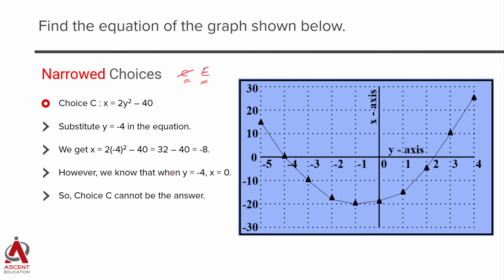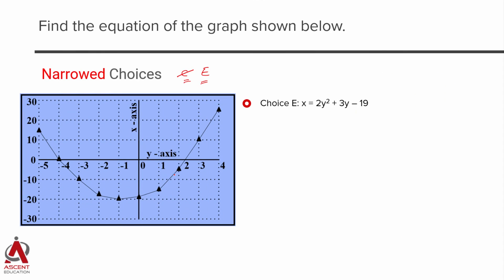Now what we are left with is choice E, but we will check out whether it satisfies before we zero in on choice E. So choice E is x is equal to 2y square plus 3y minus 19. I am going to do the same thing. Let us substitute y is equal to minus 4 in this. The value that we are getting is approximately equal to 1, whereas we know it is equal to 0, so it is around minus 4 is where it happens. We have taken this exactly minus 4, so therefore looks like we are on the right track. We will validate it with the second point.